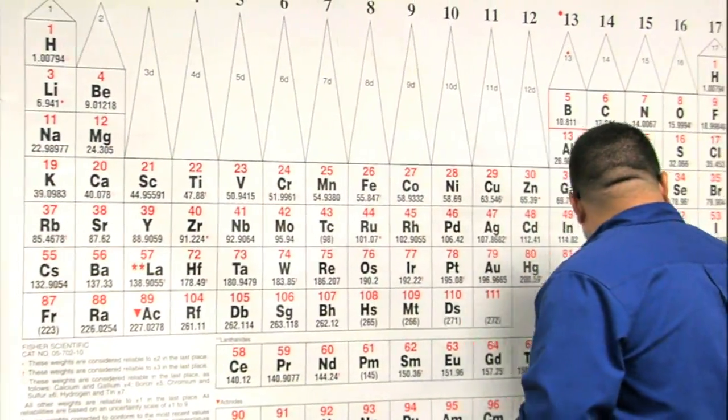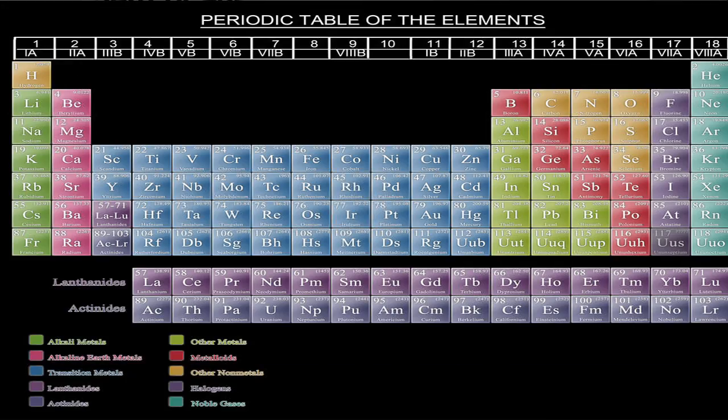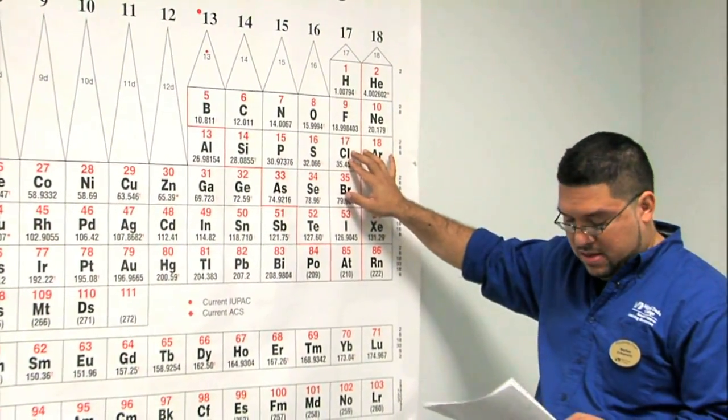If you look at chlorine, for example, chlorine is in column 7A. So then you might assume that chlorine would have, if you were thinking 7, you would be correct. Seven valence electrons. That's the idea.